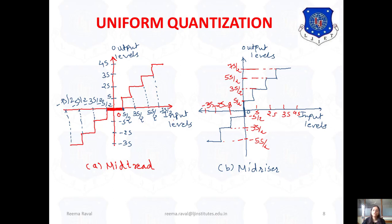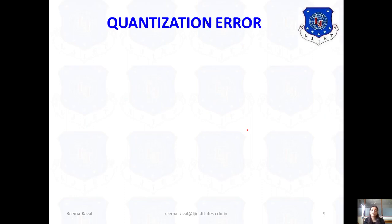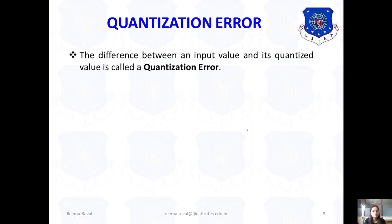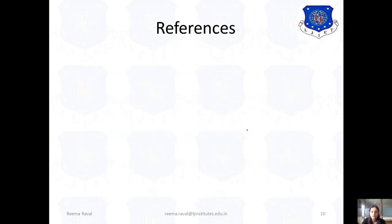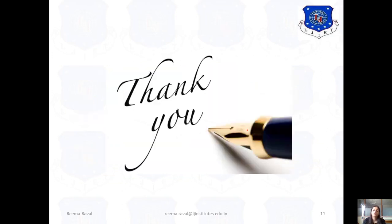Now next is quantization error. The difference between an input value and its quantized value is called the quantization error. When representing the approximation of the original signal there will be some difference between the input value and the quantized value — this difference is called quantization error, also known as approximation error. To minimize quantization error we need to take as many samples as possible and make the step size smaller. Thank you.